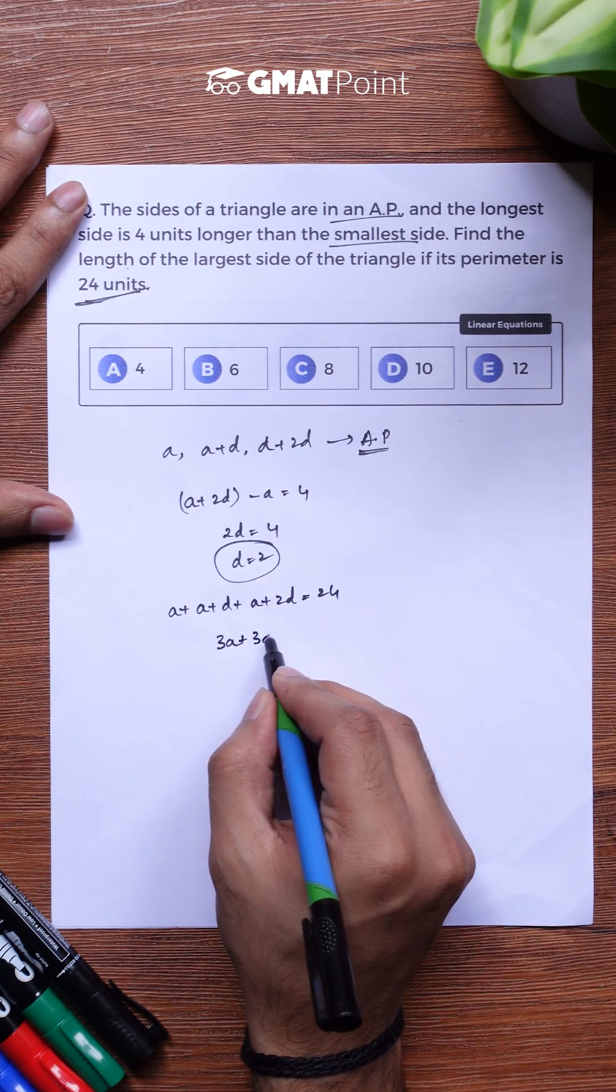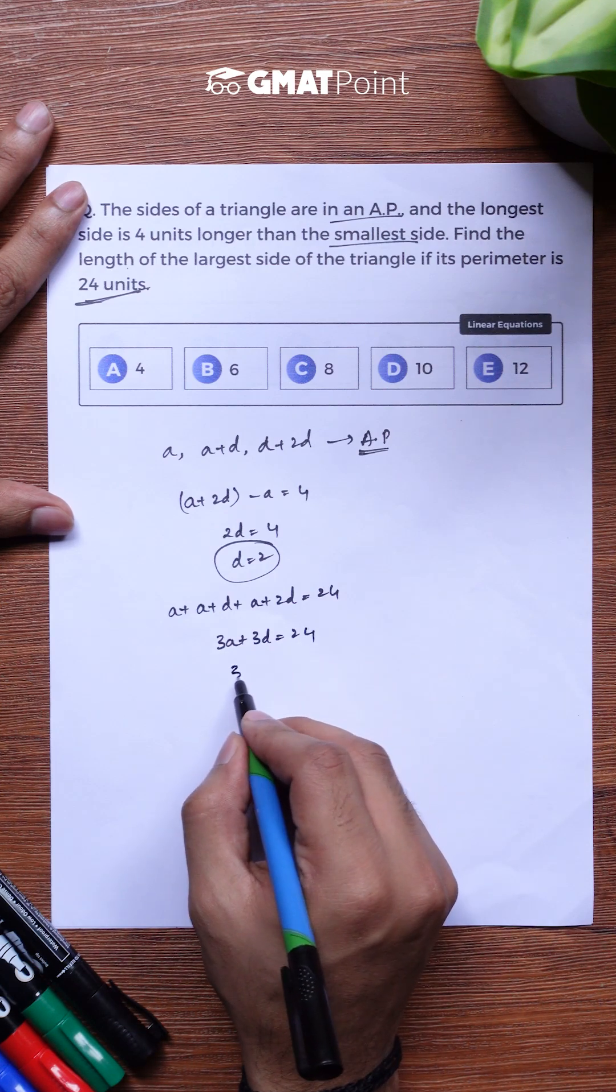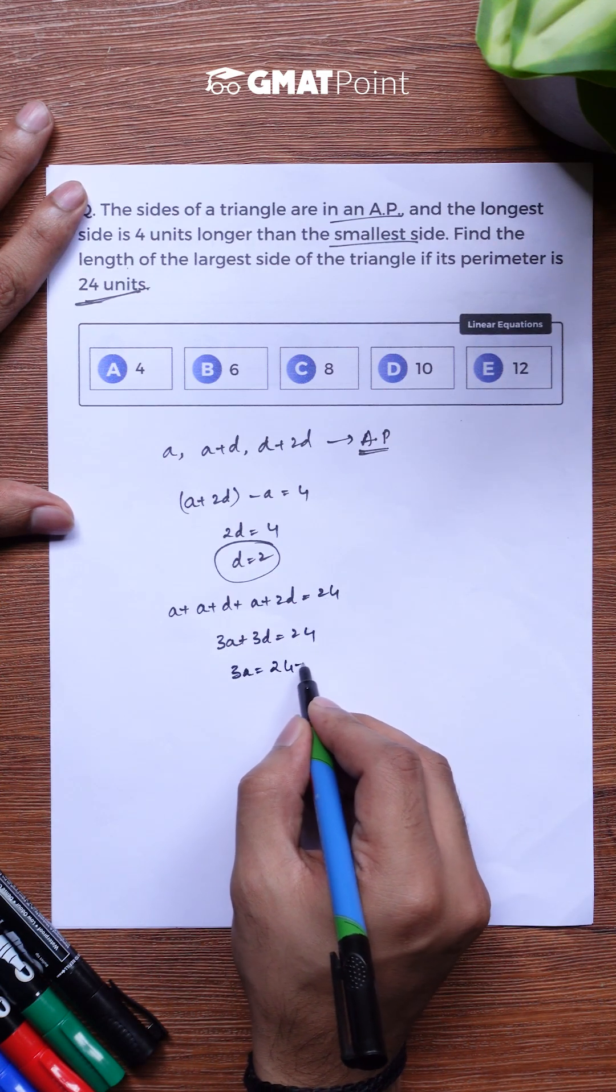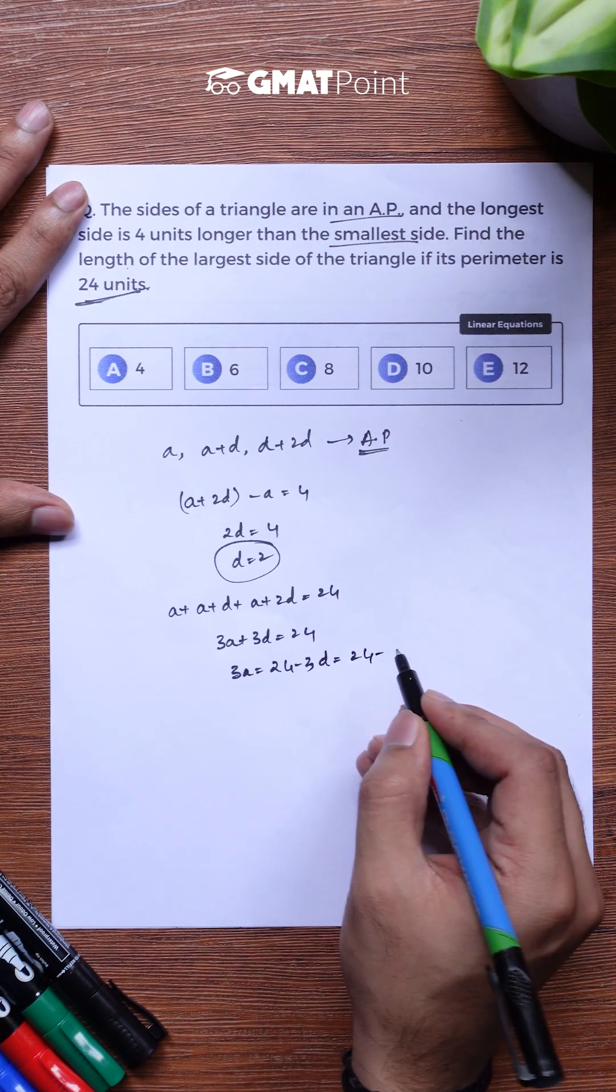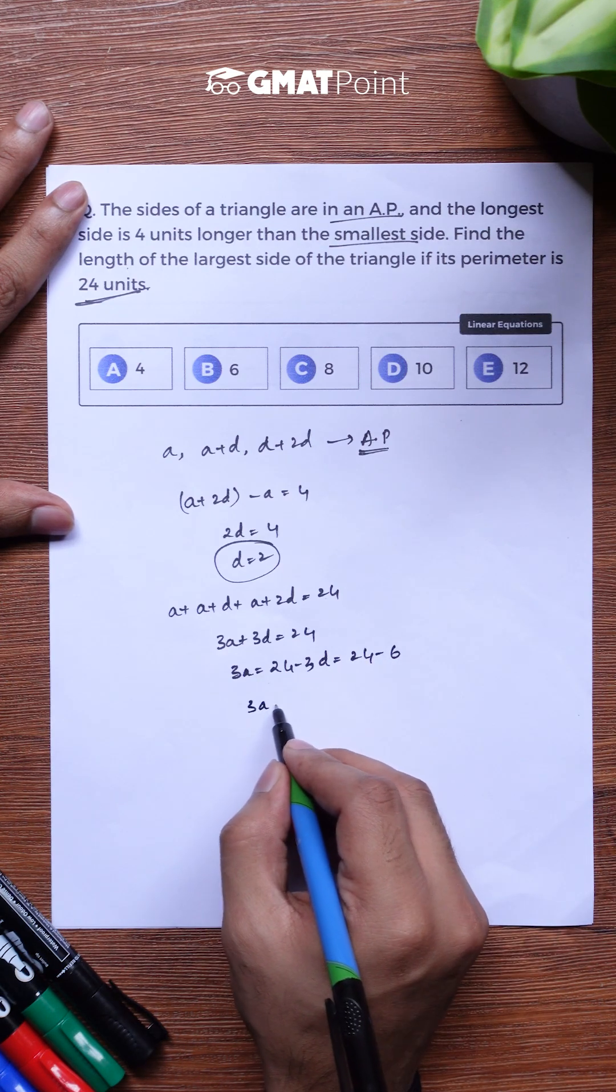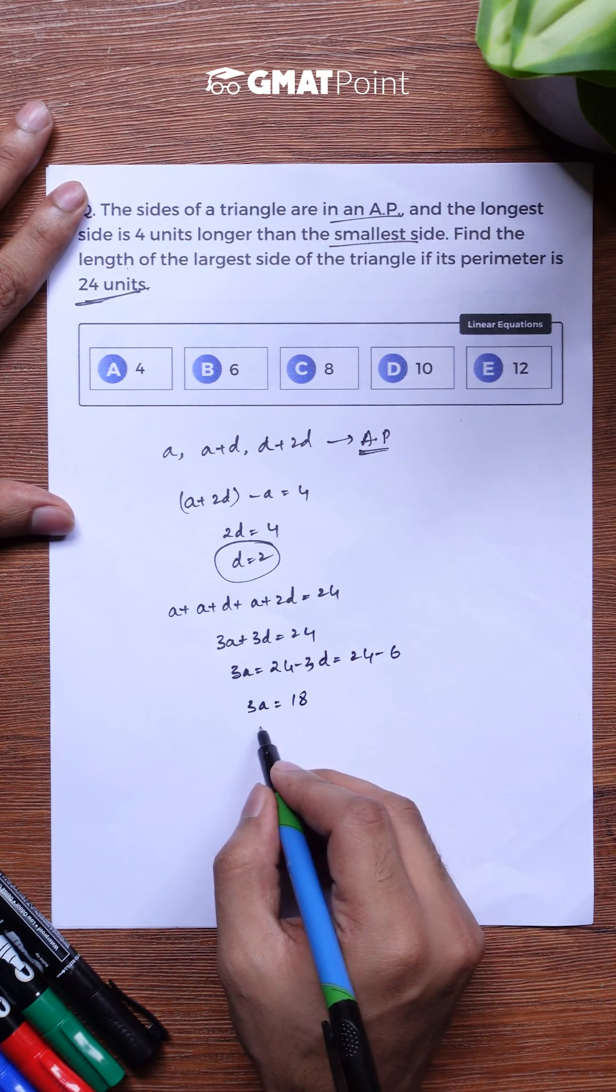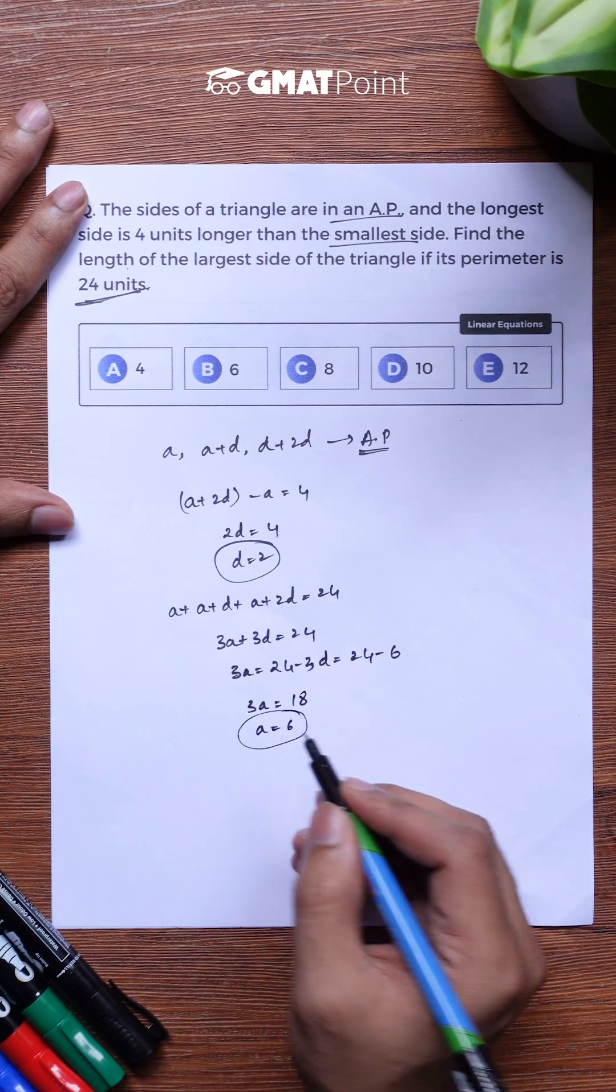So the value of 3A plus 3D is equal to 24 and we get the value of 3A to be 24 minus 3D that is equal to 24 minus 6. So we get the value of 3A to be 18 and the value of A is equal to 6.